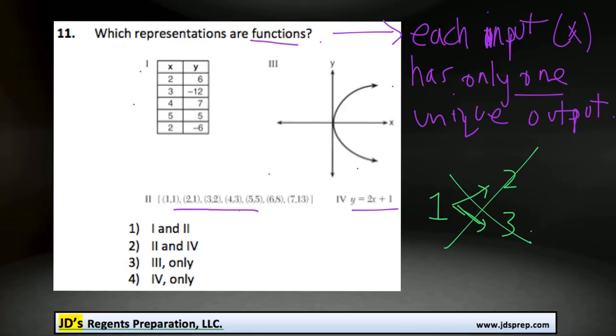So taking a look at the first set, this table of values we have here, we can see that this input of 2 gives 6, and this other input of 2 gives a different output, negative 6. And so that's the reason why this is not a function.